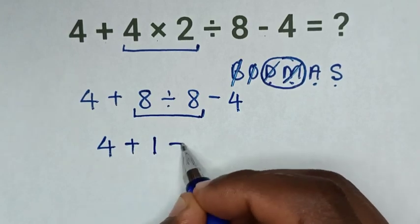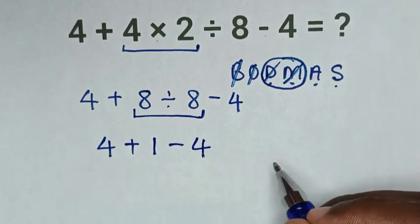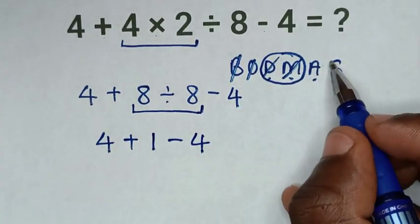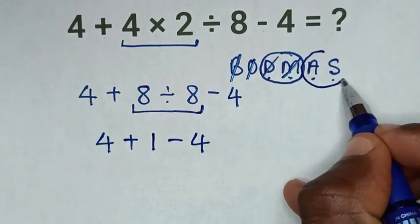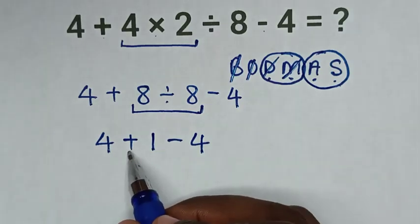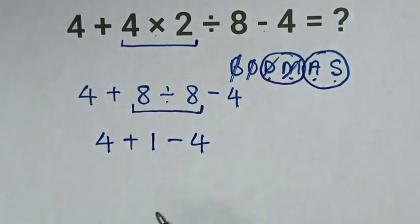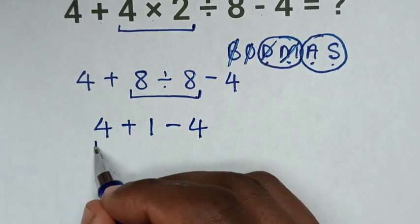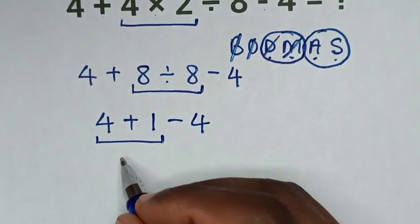Then the last group is addition and subtraction. From left to right it starts addition then subtraction, so deal with this addition first, 4 + 1 is 5.